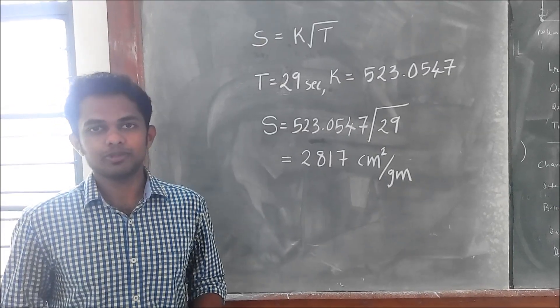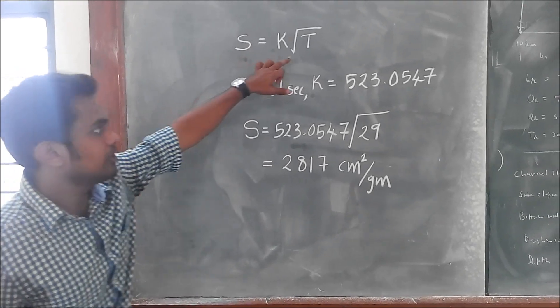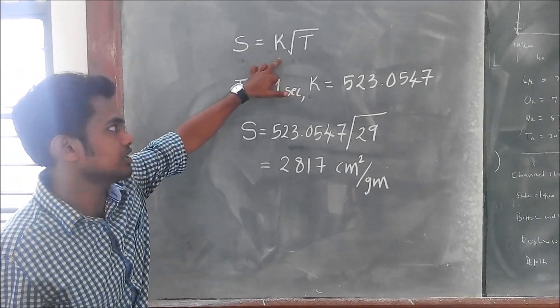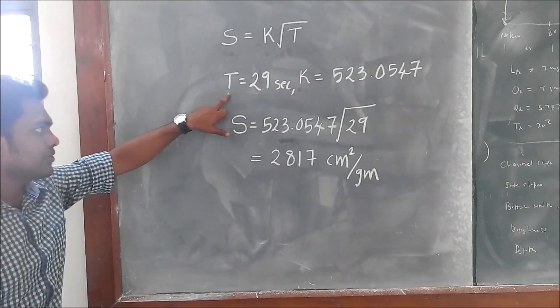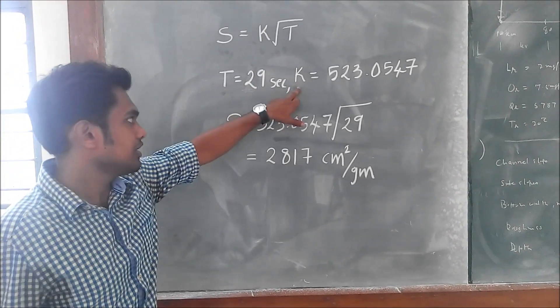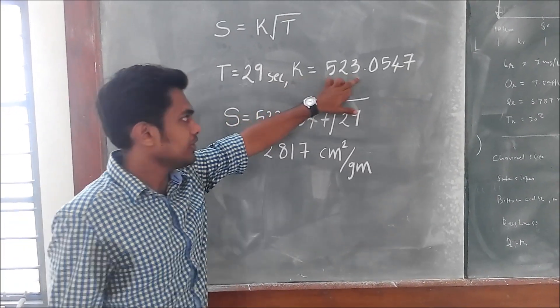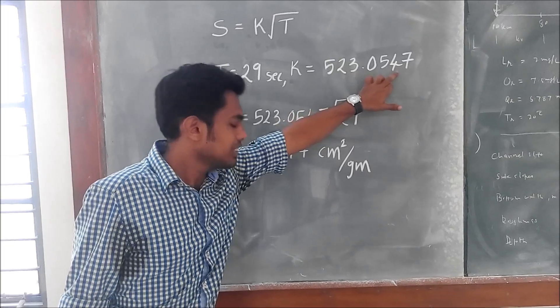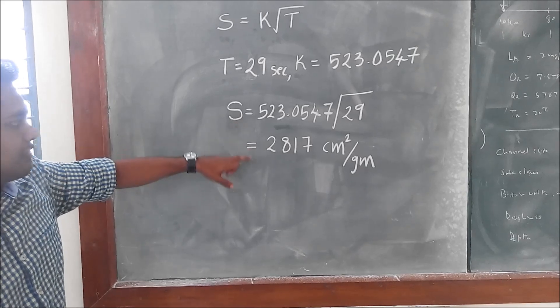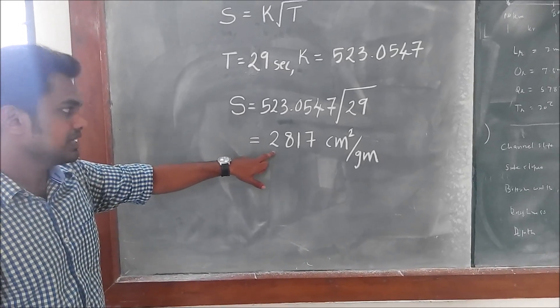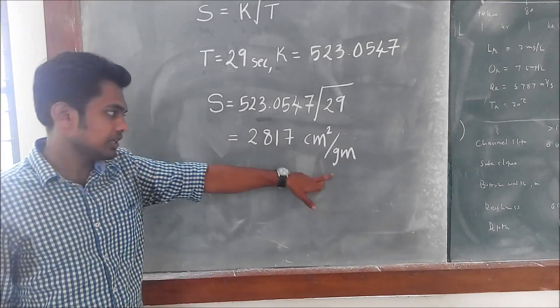For determining the specific surface area of cement, we shall use the equation. S is equal to k root t where k is the Blaine constant and t is the time of recording in seconds. We recorded the time as 29 seconds and the k value for the specific apparatus is 523.0547. By putting the value in the equation, we obtained the specific surface area as 2817 cm² per gram.